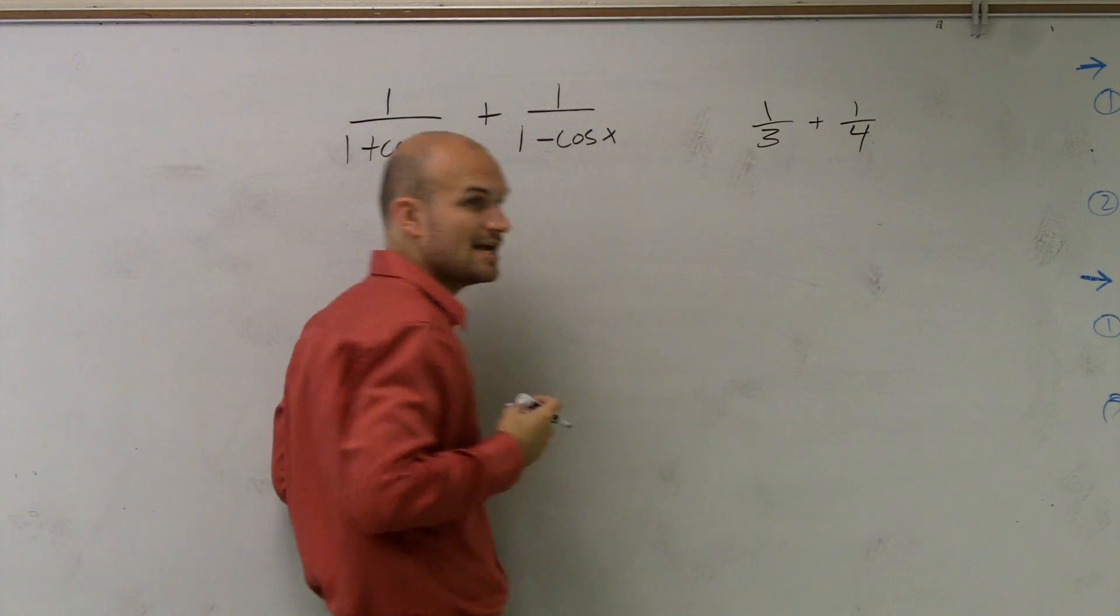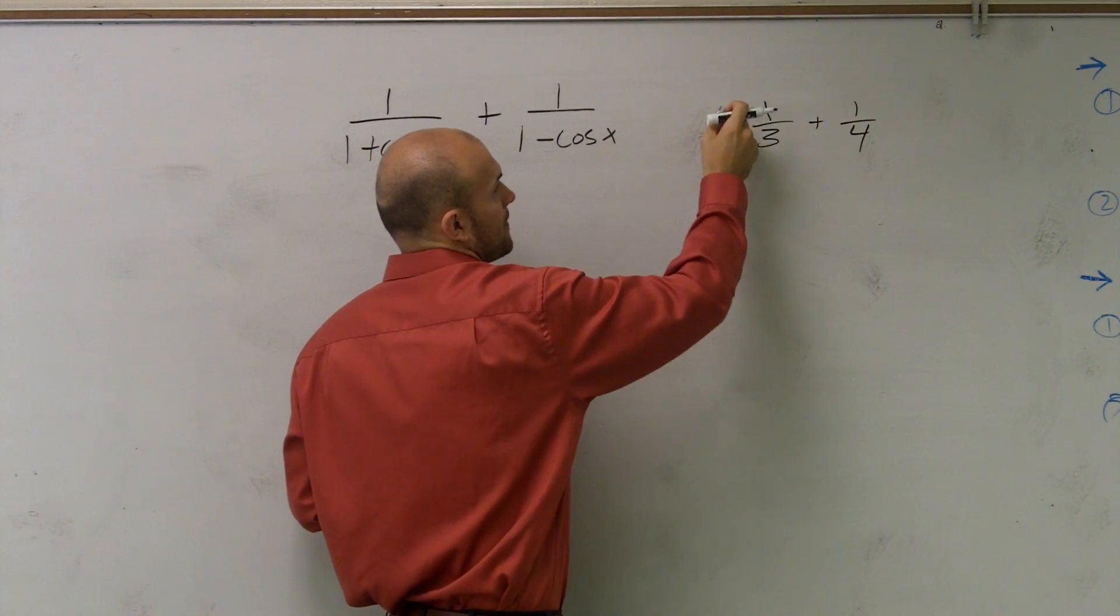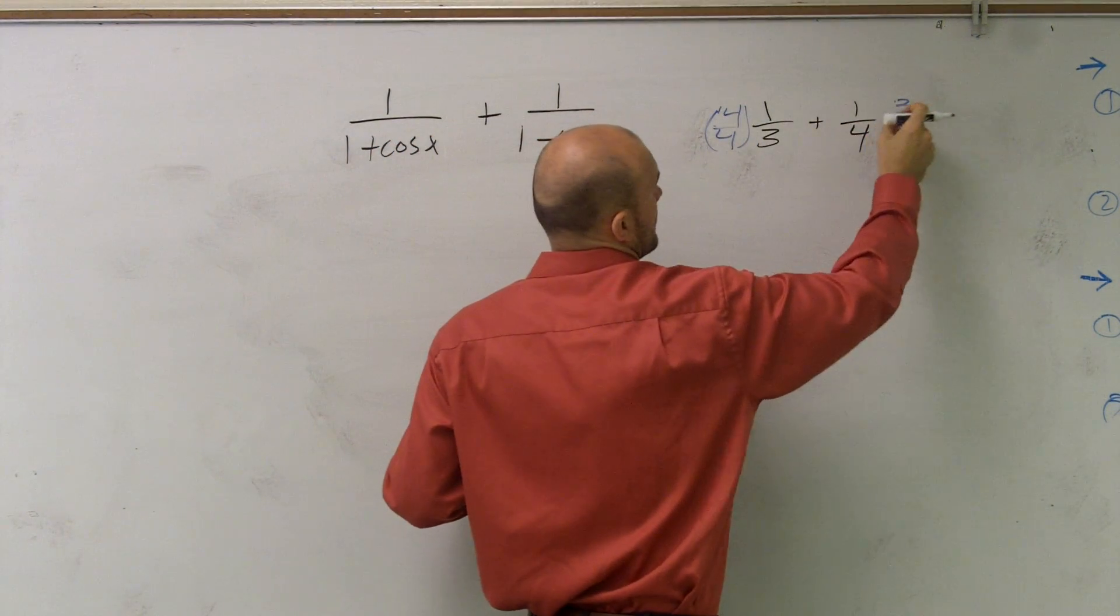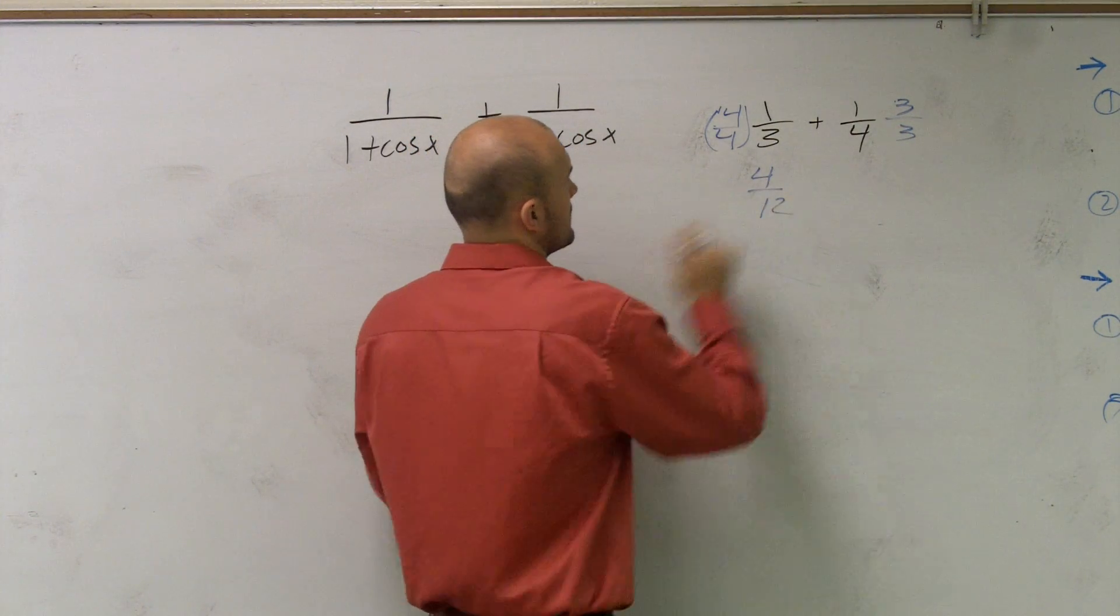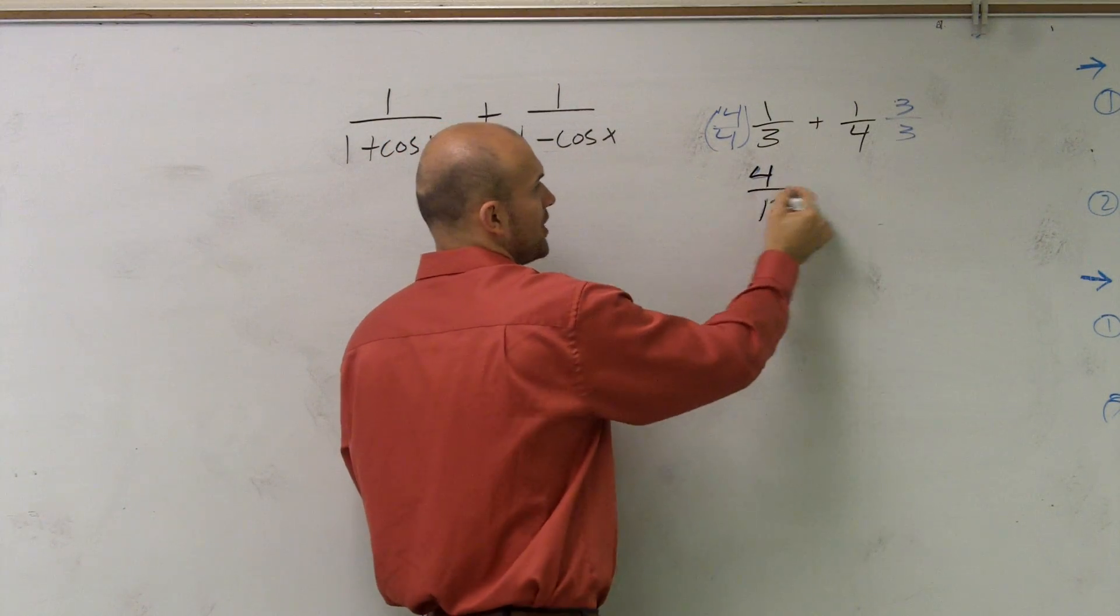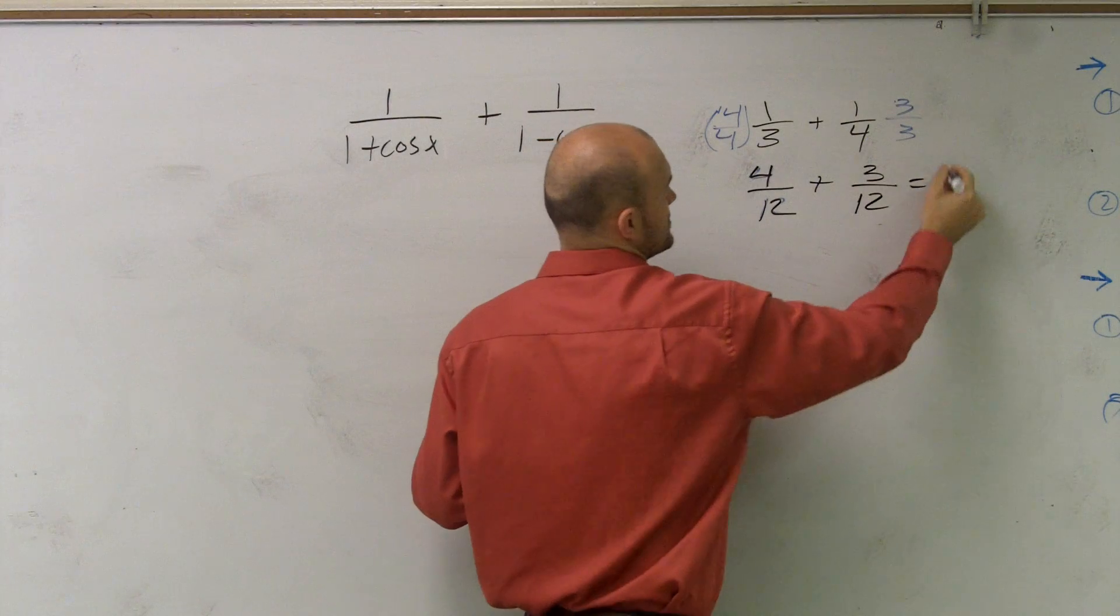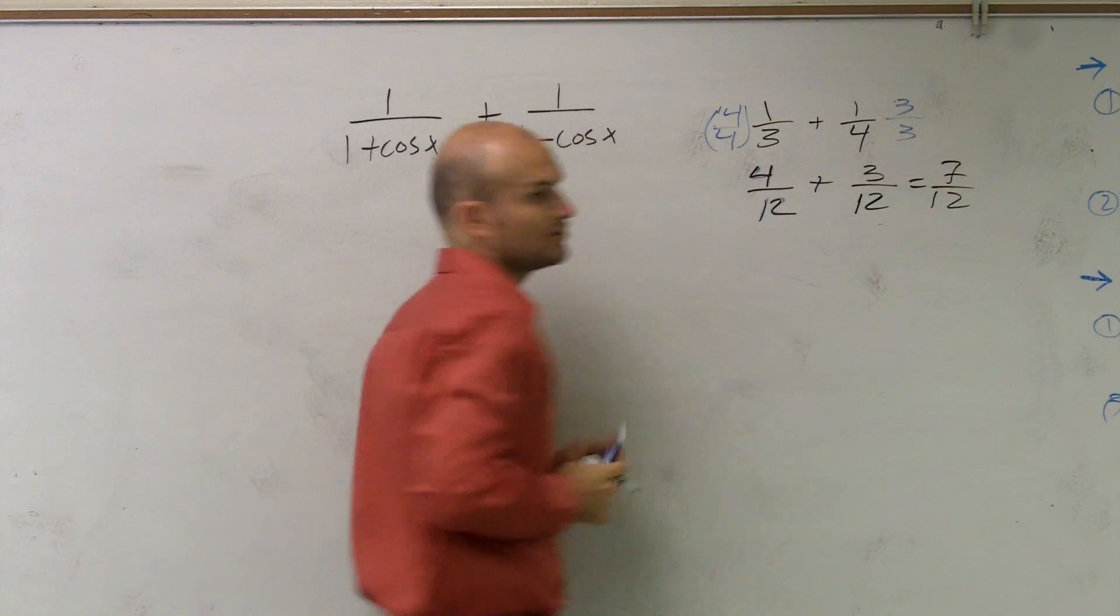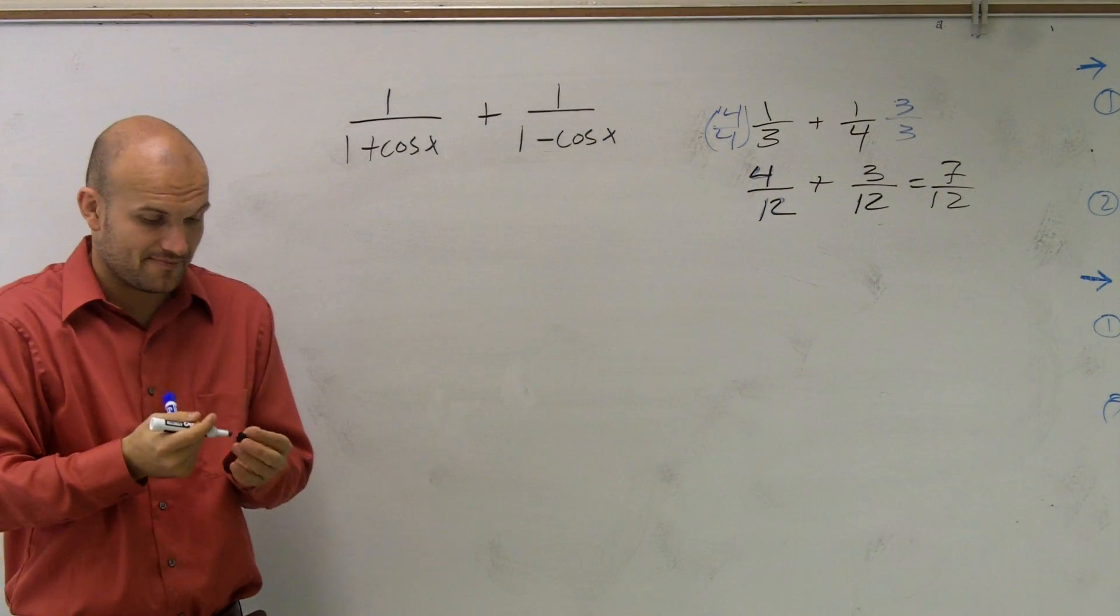So you're going to need to find the LCM, which is 12 of the denominators. When I multiply by 4 on this side, I get 4 twelfths, plus 3 over 3 on this side, and I get 3 twelfths, which equals 7 twelfths. Does everybody see what I did? You have to get your denominators to be the same.